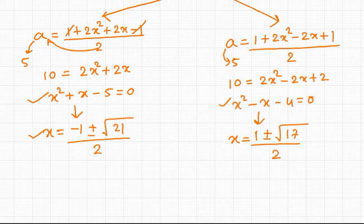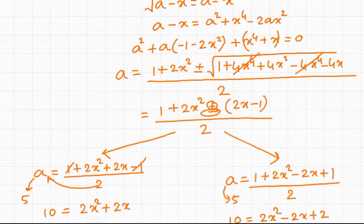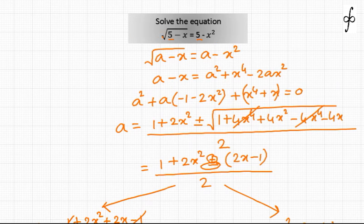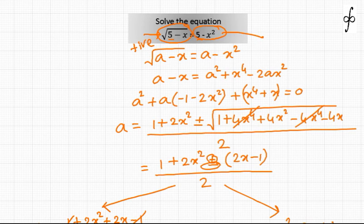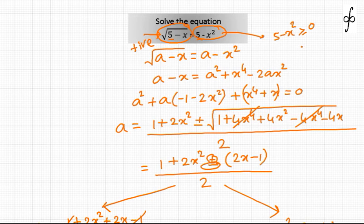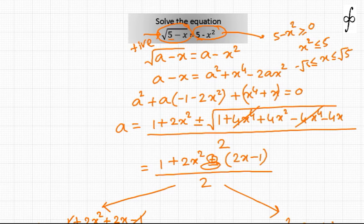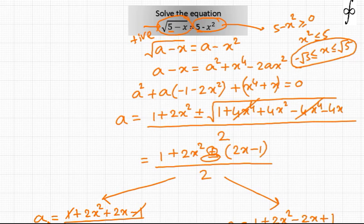We are getting four values of x — two from each equation — but the original equation was not a bi-quadratic. In the original equation, the LHS is always a positive real quantity, root of (5 minus x) is always positive. So we need to ensure that 5 minus x squared also gives a positive value. This means x squared must be less than or equal to 5, so x must lie between minus root 5 and plus root 5.